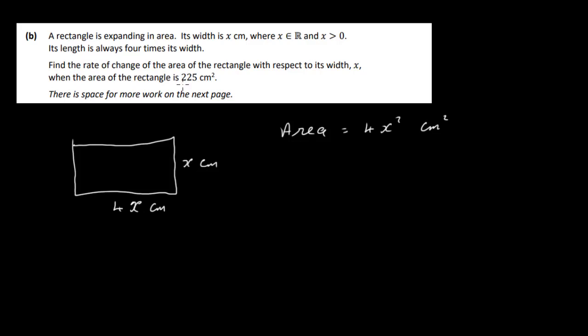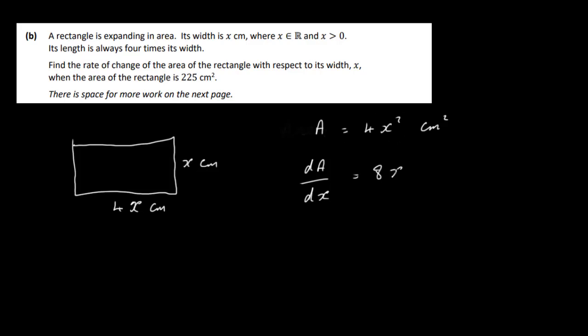We need to find the rate of change of the area of the rectangle with respect to its width x. If we call the area A, we want dA/dx. All we have to do is differentiate 4x squared, which gives us 8x. So 8x is the rate of change of the area with respect to x.